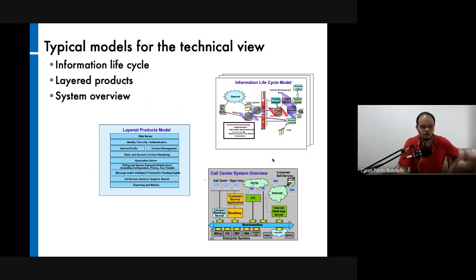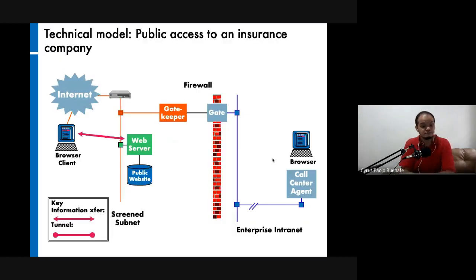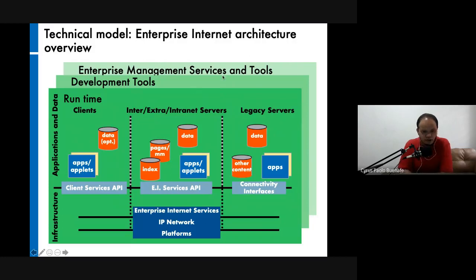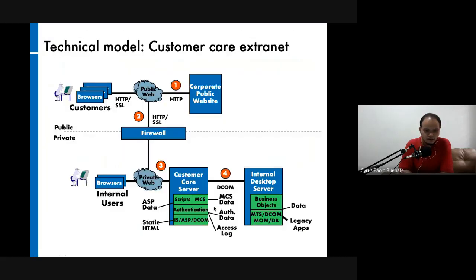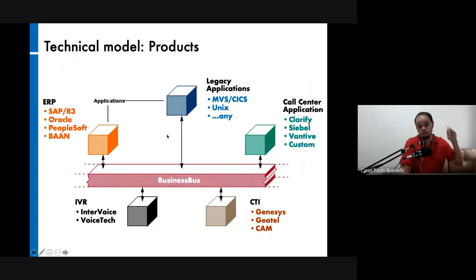For the technical view, which answers the question 'how,' models should help answer how the system works. Examples include the information life cycle, layered products, or system overview. In the presented examples, you can see flow models with layered elements, layered models with some flow around them, and tree models with layered security firewall elements.